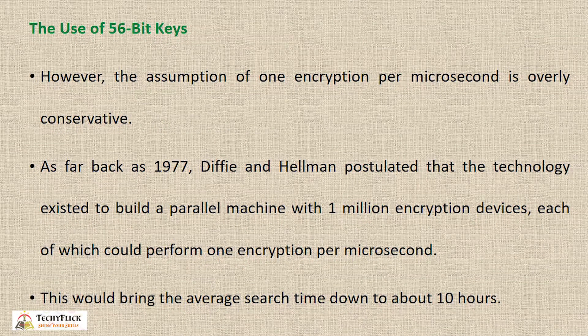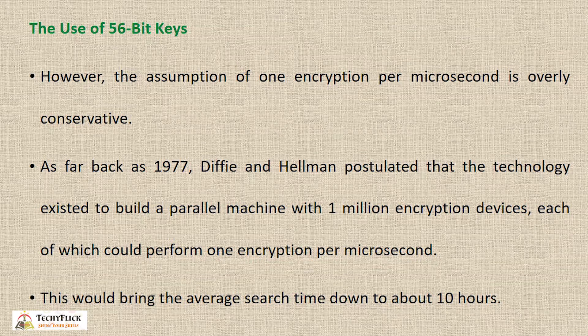As far back as 1977, Diffie and Hellman postulated that the technology existed to build a parallel machine with one million encryption devices, each of which could perform one encryption per microsecond. This would bring the average search time down to about 10 hours.